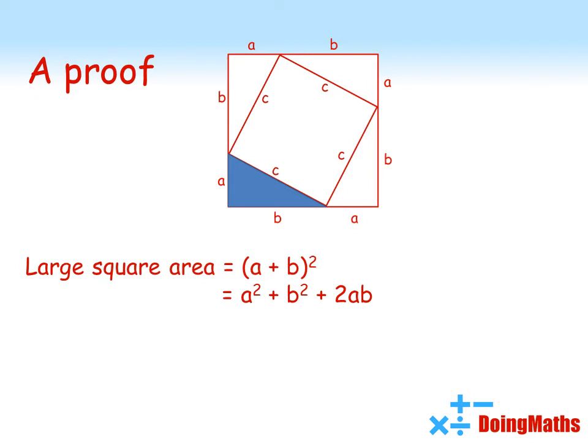But we can also express the area of the large square by thinking about it as the little square plus the four triangles. The area of the little square is c squared. The area of each of the triangles is half ab.